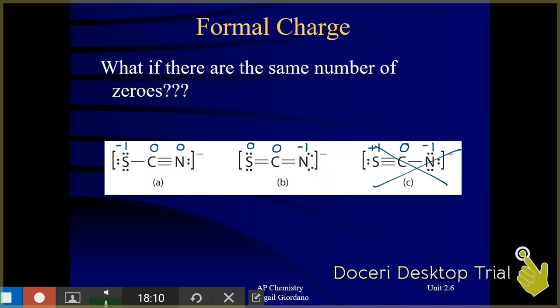If you come across this situation, you want to choose the structure where the more negative formal charge is on the more electronegative element. When you come up with the same number of zeros, you want the more negative formal charge to be on the more electronegative element. In comparing nitrogen to sulfur, nitrogen is more electronegative than sulfur. So B is my winner because that negative one formal charge is on nitrogen. B is the structure for this ion that is most likely to be found out in nature.